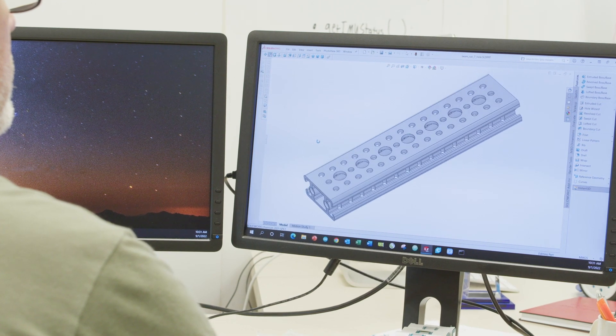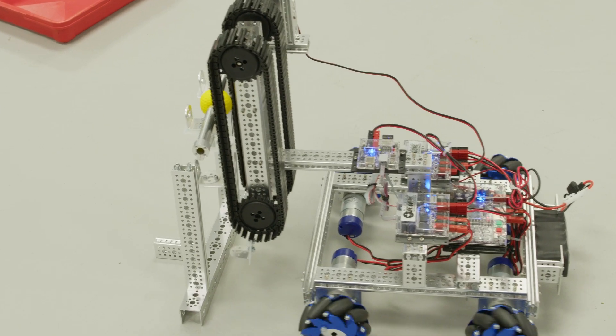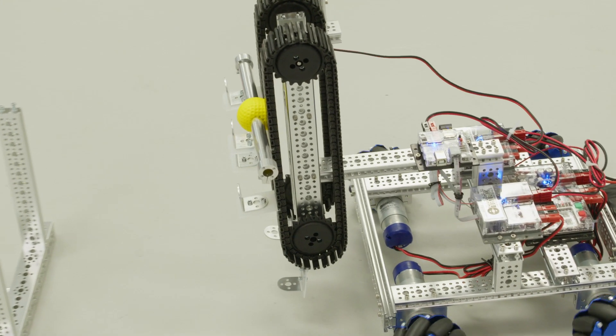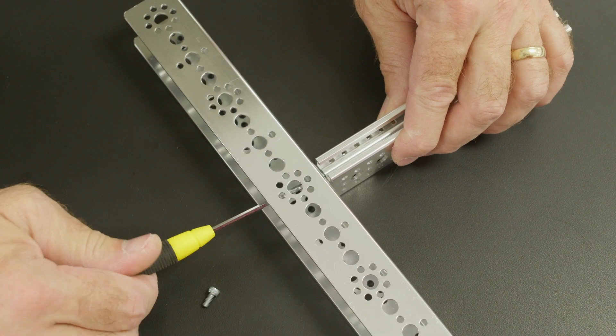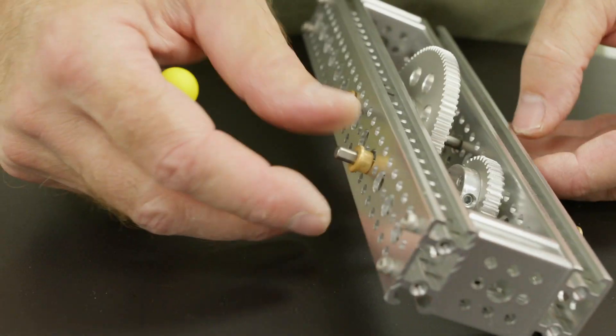At Pitsco Education, we've been hard at work developing Tetrix building elements to help you build a better bot. Introducing Tetrix Robo Rails, a structural building element that is fully compatible with existing Tetrix Prime and Max Kits and Parts.